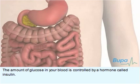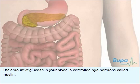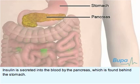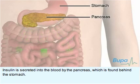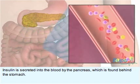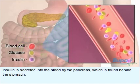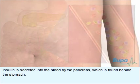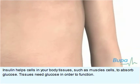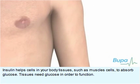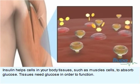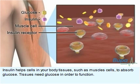The amount of glucose in your blood is controlled by a hormone called insulin. Insulin is secreted into the blood by the pancreas, which is found behind the stomach. Insulin helps cells in your body tissues, such as muscle cells, to absorb glucose. Tissues need glucose in order to function.